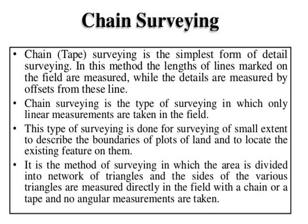Chain surveying is the simplest form of surveying. In this method, the length of lines marked on the fields are measured while the details are measured by offset from these lines. Chain surveying is a type of surveying in which only linear measurements are taken in the field. It is the method in which the area is divided into a network of triangles, and the sides of the various triangles are measured directly in the field with a chain or tape, and no angular measurements are taken.